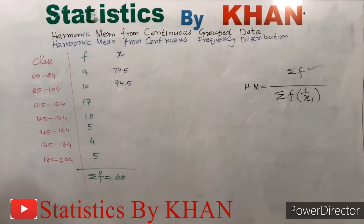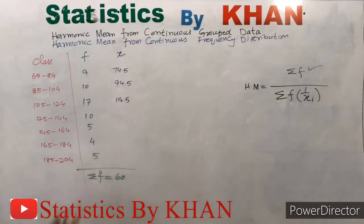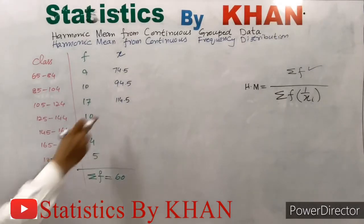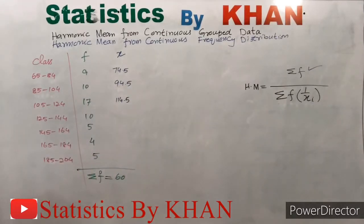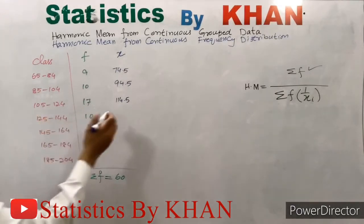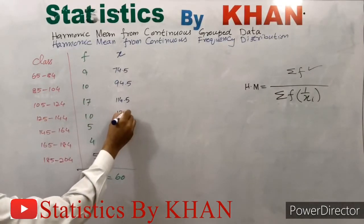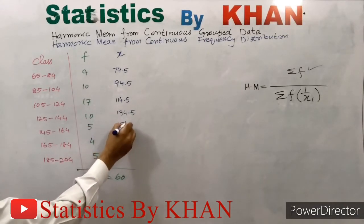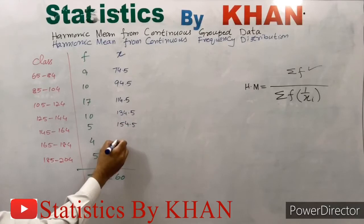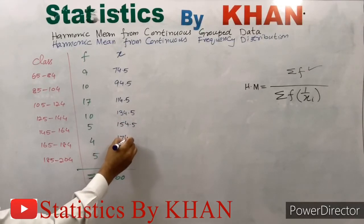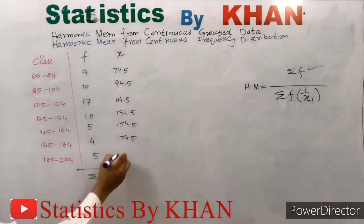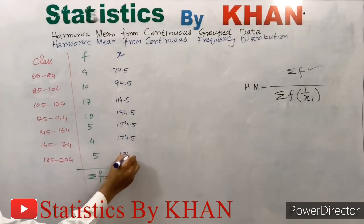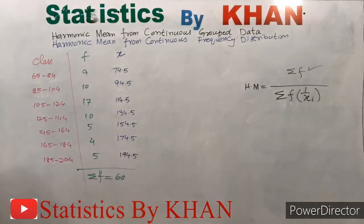Adding 20 to 94.5 gives the midpoint 114.5 for the next class. Adding 20 again gives 134.5, then 154.5, then 174.5, and the last class midpoint is 194.5. So now we have all the values of x.